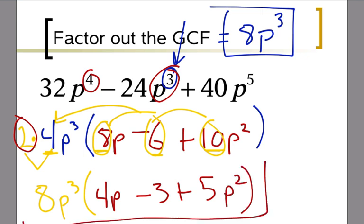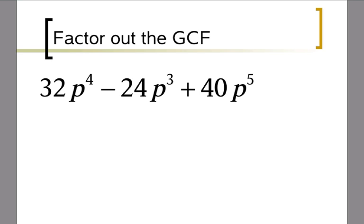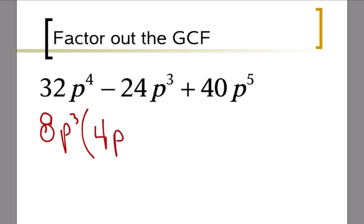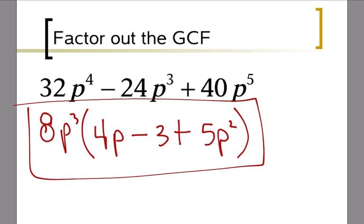The real answer, done correctly from the start: pull out 8p cubed. Then 32 ÷ 8 is 4p (exponent 4 minus 3 = 1), minus 24 ÷ 8 is 3 (p cubed cancels), plus 40 ÷ 8 is 5p squared. This is how you should have done it the first time. It happens frequently that we don't pull out the greatest common factor on the first try — that's okay, just keep factoring whatever else you can pull out and multiply it in front.